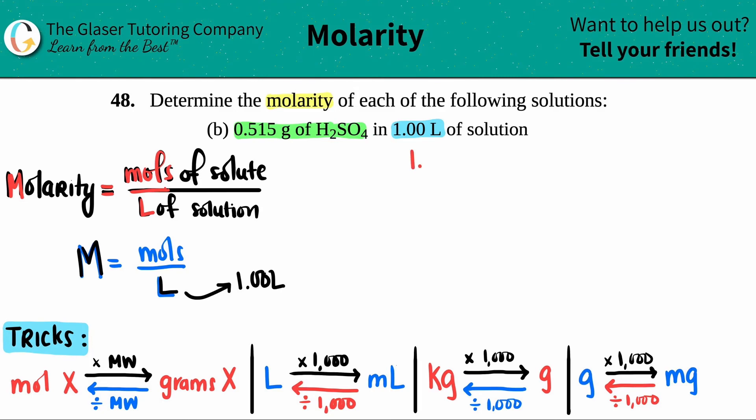We have to convert that 0.515 grams of H2SO4 into moles of H2SO4. How do we do that? We've done tons of practice. To go from grams to moles, we could do dimensional analysis, but there are little tricks to save time.